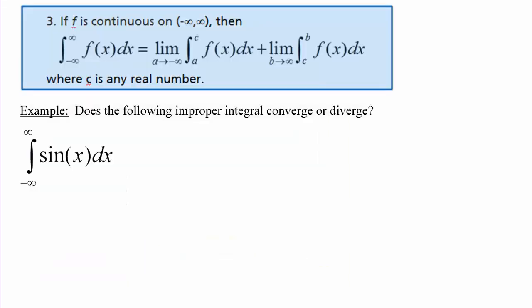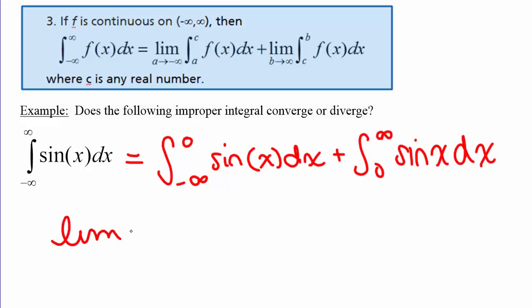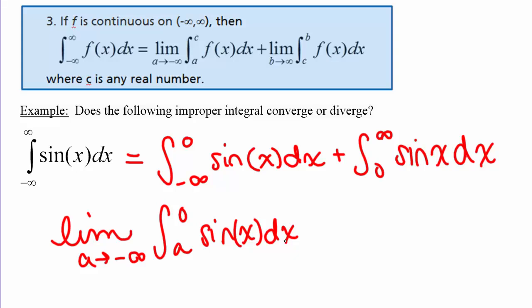Let's look at an example: does the integral from negative infinity to infinity of sine of x dx converge or diverge? The first thing we do is split this into two integrals: the integral from negative infinity to 0 of sine of x dx, plus the integral from 0 to infinity of sine of x dx. The number 0 doesn't have to be 0, but it must be some specific number. We then convert each into a limit: the limit as a goes to negative infinity of the integral from a to 0 of sine x dx, plus the limit as b goes to infinity of the integral from 0 to b of sine x dx.